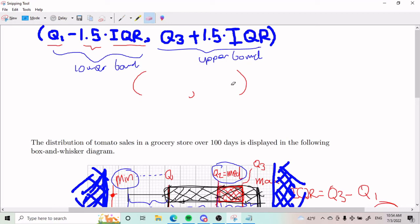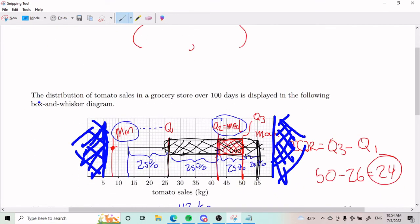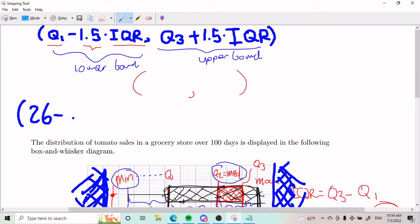That's how you read an interval once you get to this stage. Let's get there first. For the lower bound, we're going to have Q1, which we identified earlier as 26. So we have 26 minus 1.5 times the IQR. The IQR we got from part C was 24. So the lower bound is actually going to be negative 10.